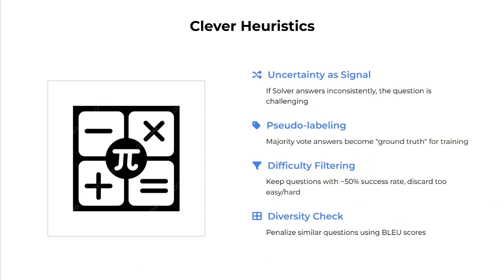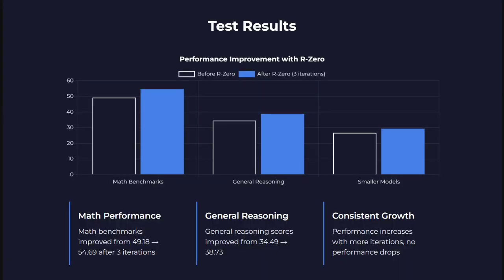A diversity check penalizes similar questions using BLEU score, so if the Challenger starts producing similar types of questions, it gets penalized. The framework introduces a reward system for both the Solver and Challenger. This has been tested for maths, and the results look quite promising. On math benchmarks using Qwen models, improvements of six to seven points have been seen, including for smaller models on general reasoning and math benchmarks.